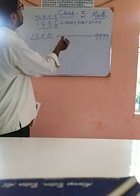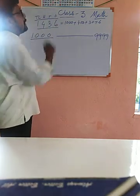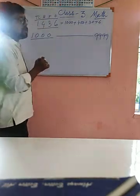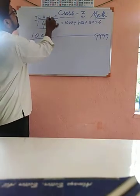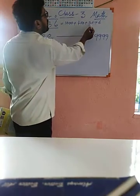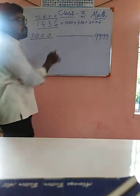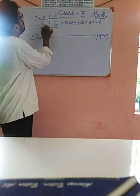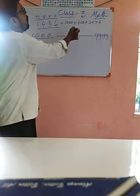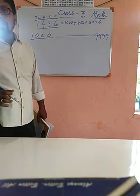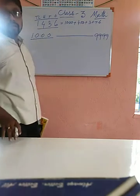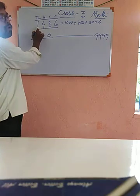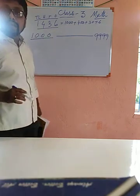Now you can see: six is on the ones place, so its place value is only six. Three is on the tens place, so thirty is its place value. Four is on the hundreds place, so four hundred is its place value. And one is on the thousands place, so its place value is one thousand.